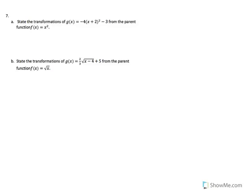Number 7A: state transformations of g of x equal to negative 4 quantity x plus 2 squared minus 3, from the parent function f of x equal to x squared.